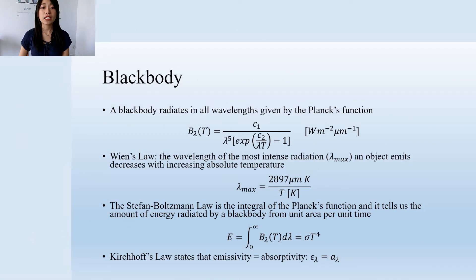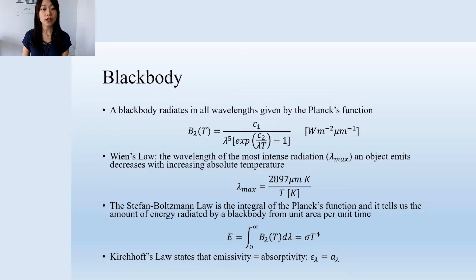If you haven't watched the video on blackbody, I'll put the link on there. So a blackbody radiates in all wavelengths, and the amount of radiation that it emits is described by the Planck's function. By setting the derivative of the Planck's function equal to zero, we can find the wavelength at which the object emits the most radiation — this equation is called Wien's law. We can also take the integral of the Planck's function to find the amount of energy radiated by a blackbody, and this is the Stefan-Boltzmann law.